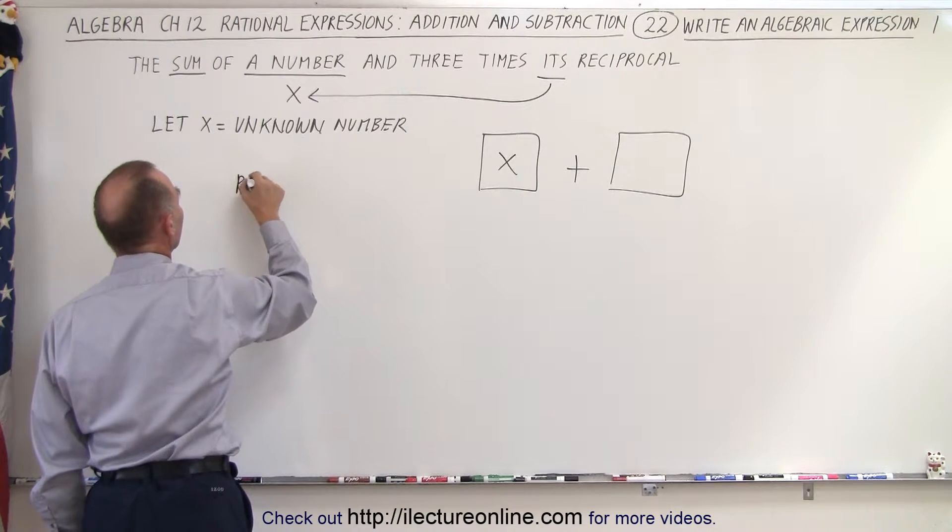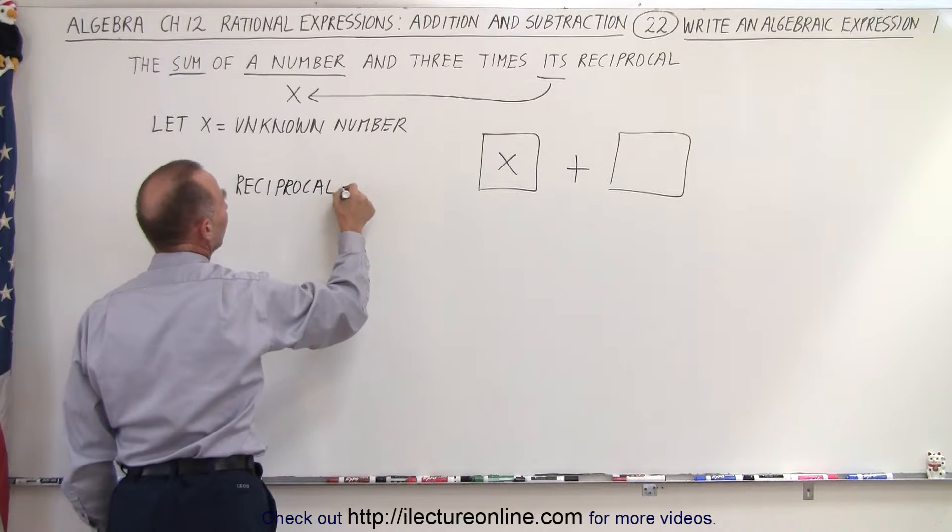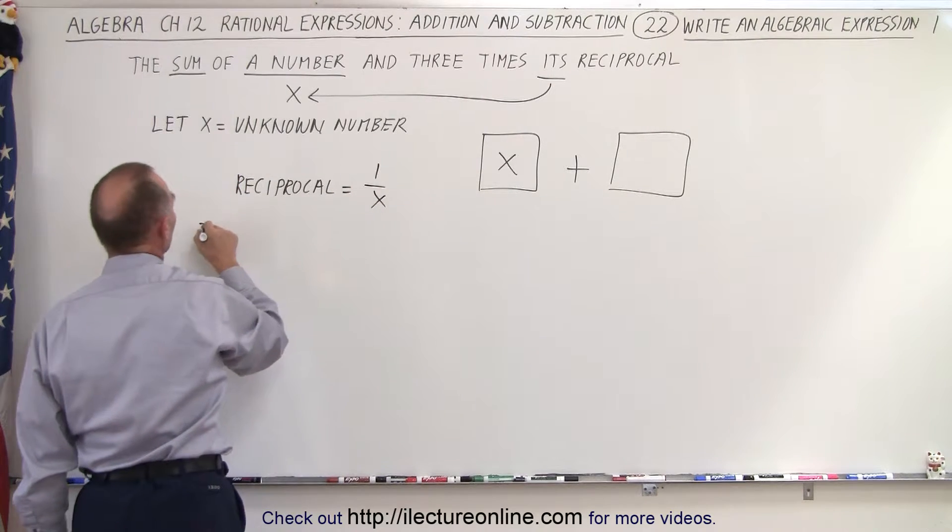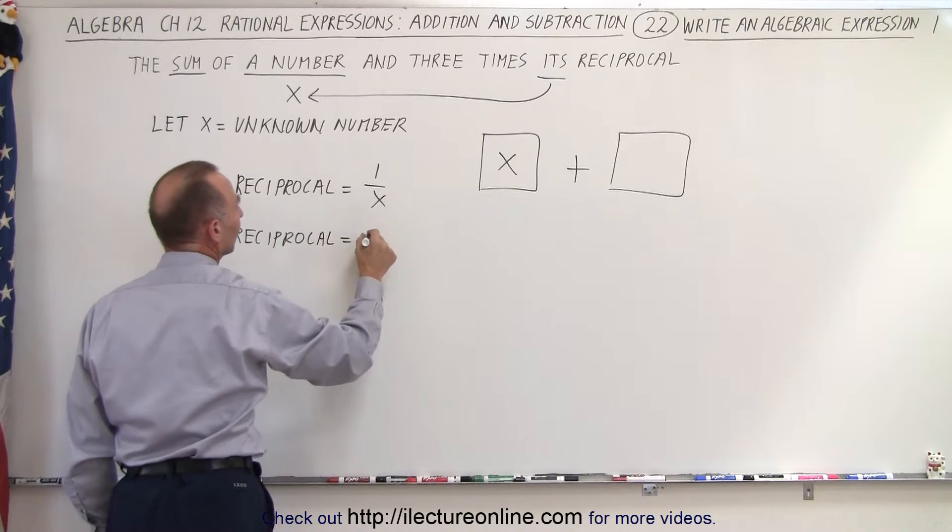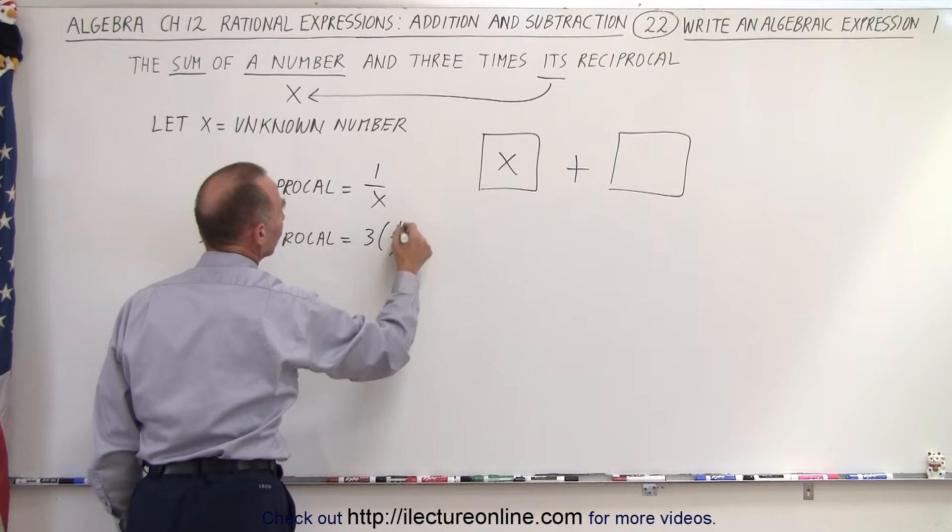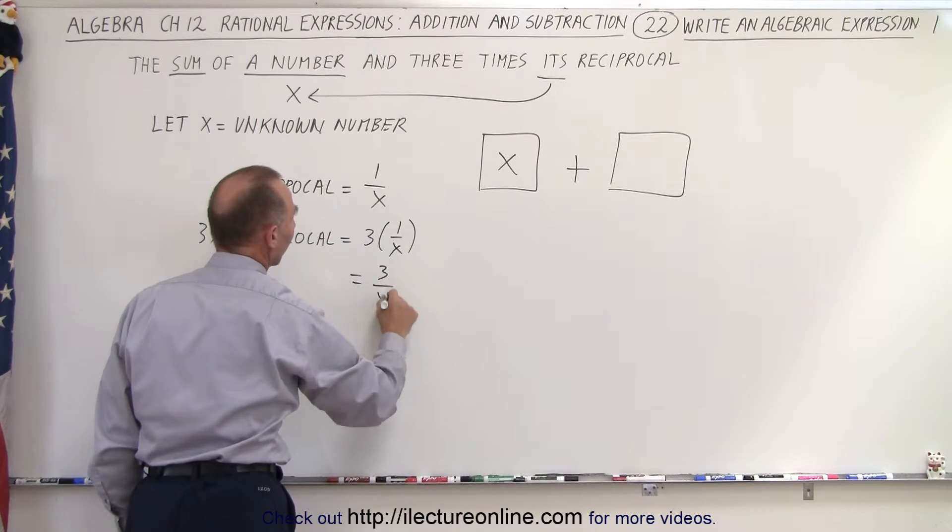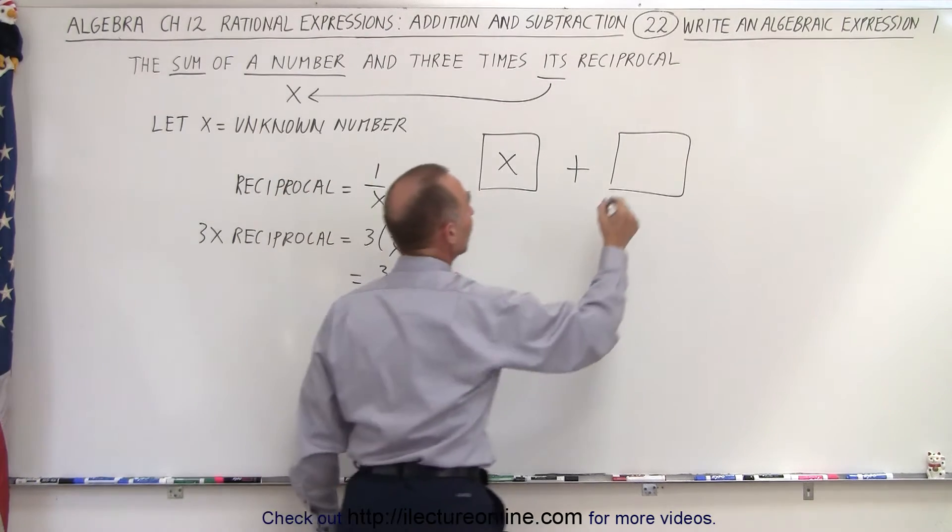So first of all, the reciprocal is equal to one over X, and three times the reciprocal is three times one over X, or simply three over X. In other words, that's the other thing we're going to add.